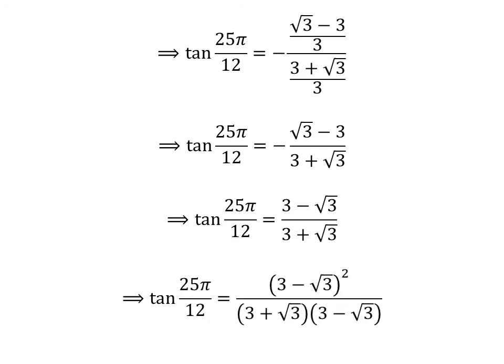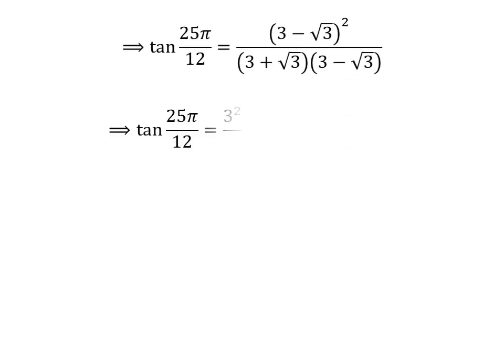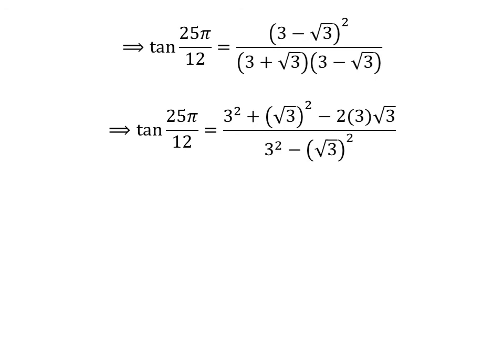Let us rationalize the fraction. Since multiplying the numerator and denominator by a common factor does not change the value of the fraction, we multiply the numerator and denominator of the above fraction by 3 minus square root of 3. We get tangent of 25 times pi upon 12 is equal to square of 3 minus square root of 3 upon 3 plus square root of 3 times 3 minus square root of 3. Expanding the square of 3 minus square root of 3, the numerator has 9 plus 3 minus 2 times 3 times square root of 3.